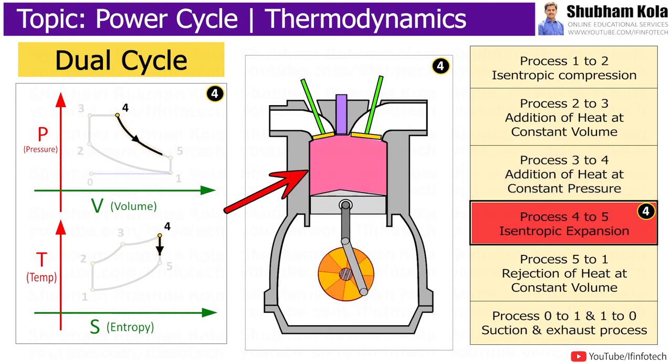Process 4 to 5 is where gas expands adiabatically from state 4 to state 5 as piston moves from volume V3 to bottom dead center. The gas works on piston and loses the amount of internal energy equal to work that leaves the system, and again the entropy remains unchanged.